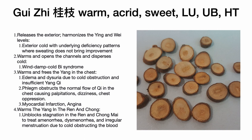The second herb in this formula is Gui Zhi — cinnamon tree branches. This herb is warm, acrid, and sweet; it enters the lung, bladder, and heart channels. It releases the exterior but also harmonizes the ying-nutritive and wei-protective levels. This is important when exterior cold comes with underlying deficiency patterns where sweating does not bring improvement. Gui Zhi also warms and opens channels, disperses cold, and can be used for wind-damp-cold bi syndrome.